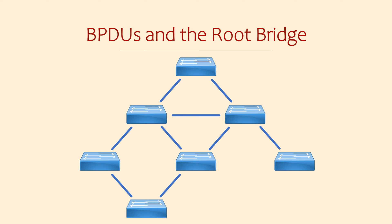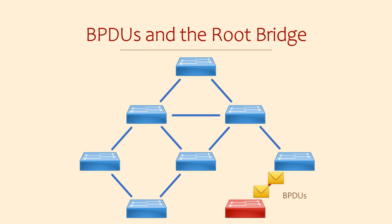The first piece of the Spanning Tree puzzle is the BPDU, or Bridge Protocol Data Unit. This is a message that switches start sending out their interfaces from the moment they come online. Each switch will see the BPDUs from other switches — this is how they initially discover each other and learn details about their neighbours.